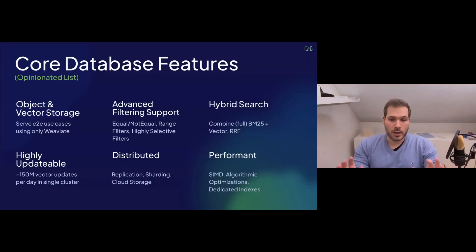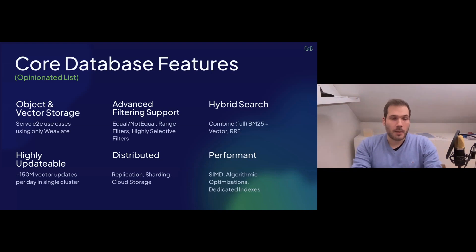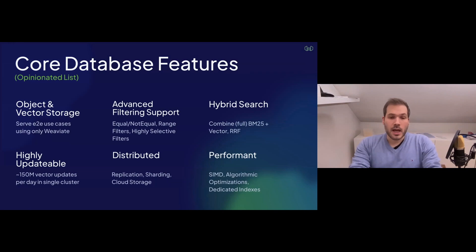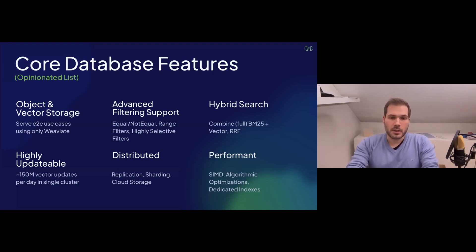From a more database-centric perspective, these are a couple of features I want to highlight. It starts with object and vector storage — if you perform a vector search in Weaviate, you get the whole data object, the whole document back, not just an ID requiring a secondary system. You can combine this with basically any filter you know from other databases: exact matching filters like equal or not equal, range filters such as a price range in e-commerce, and even highly selective filters, which I'll get to in a moment.